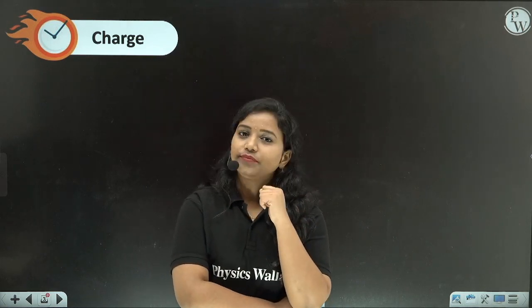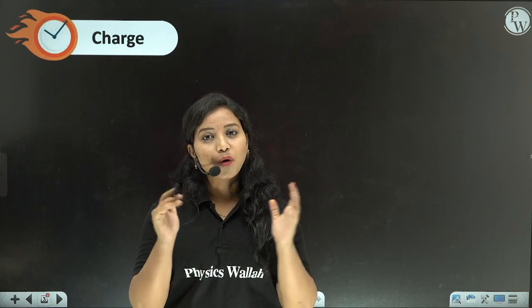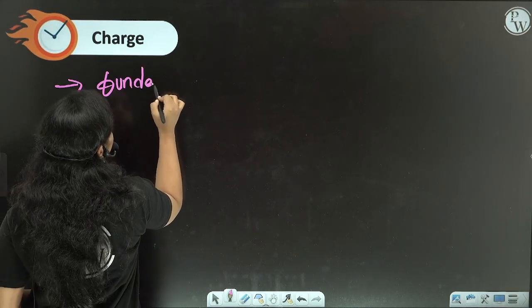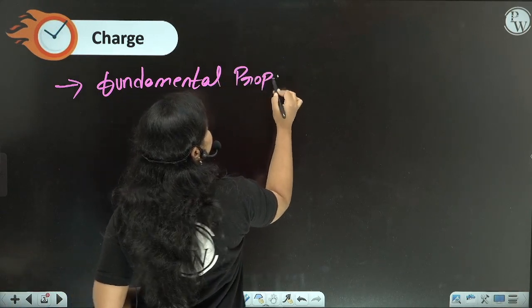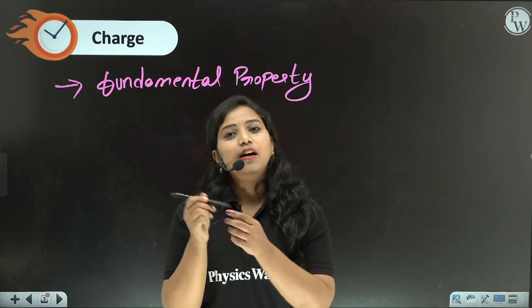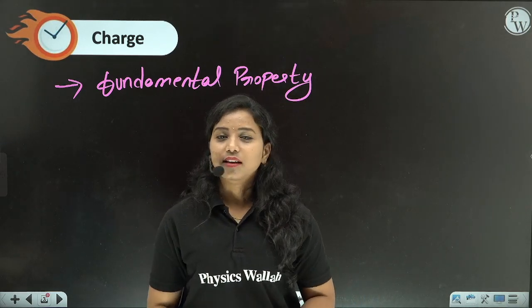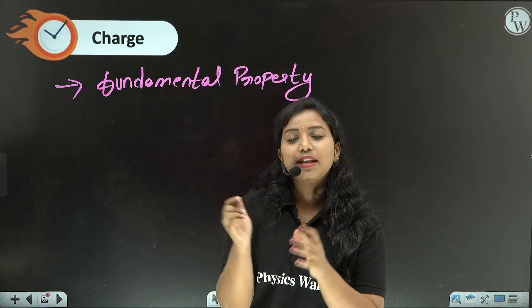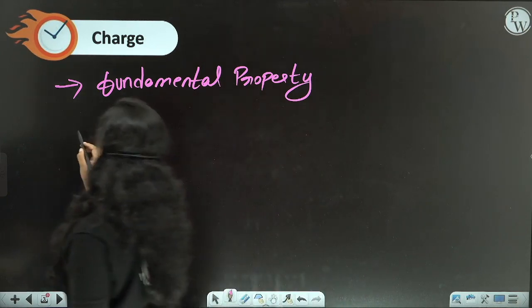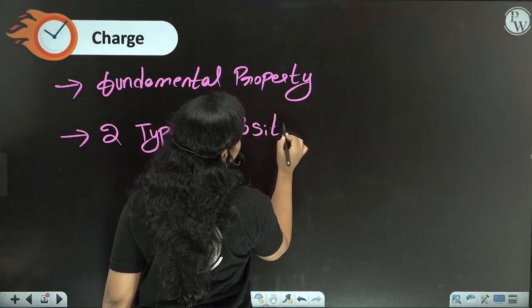First of all, charge. Charge is a fundamental property. When you take any normal object, if you zoom in completely to the micro level or even the nano level and observe the smallest particles, every object is made up of tiny tiny particles. Every object is formed from these particles — this fundamental property is called charge. Generally, charge has two types: positive and negative charges.